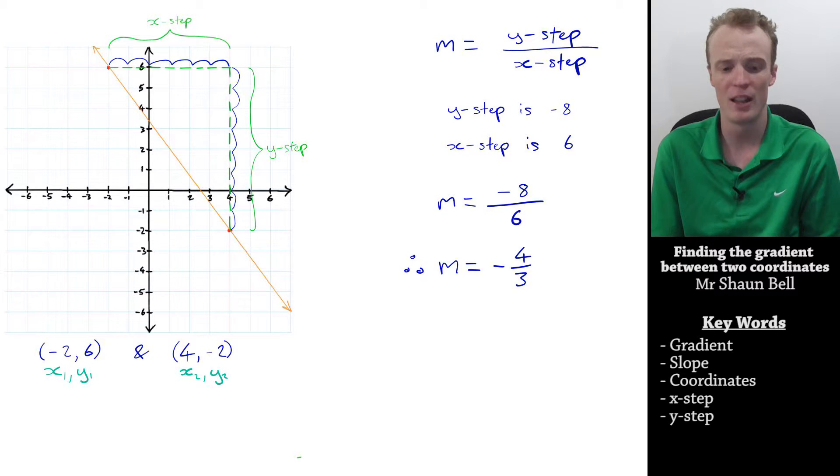Whenever we break the journey up into the x step and y step, like we've had here, we have essentially broken up the coordinates as well into the x's and the y's. In order to find this y step, we actually need to find the difference between the two y coordinates. And I like to write this as y2 subtract y1.